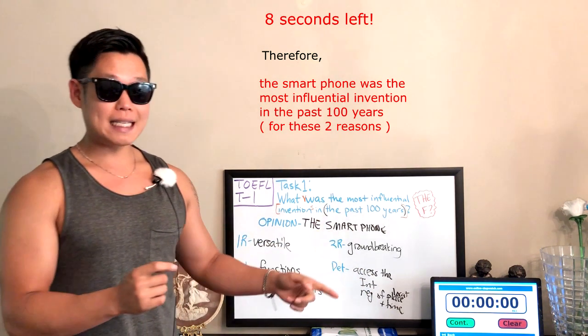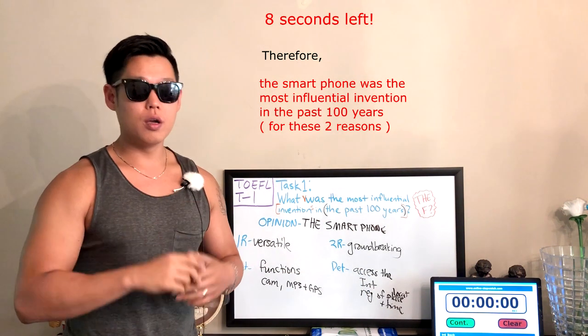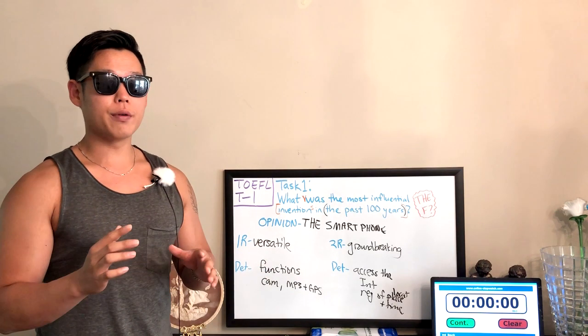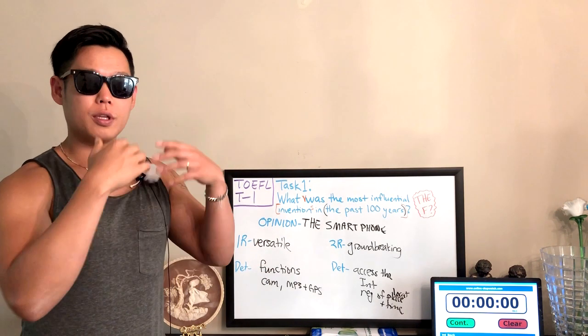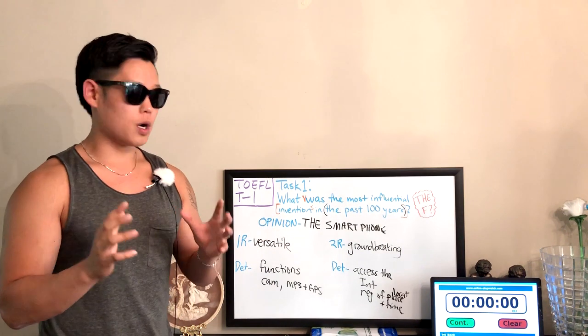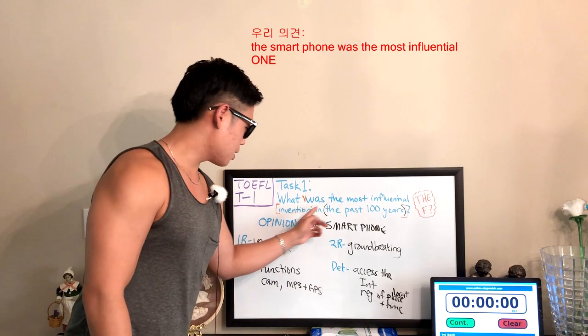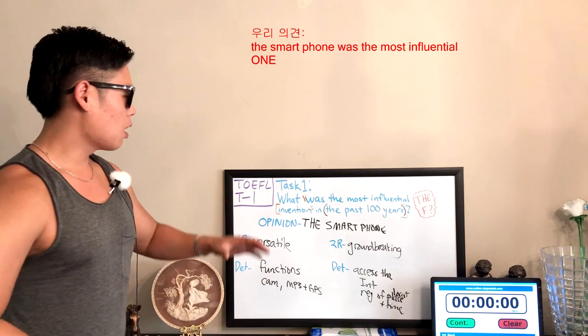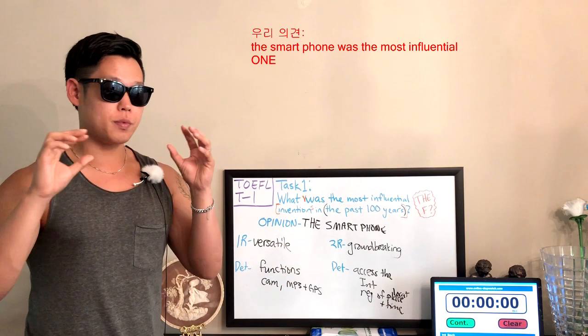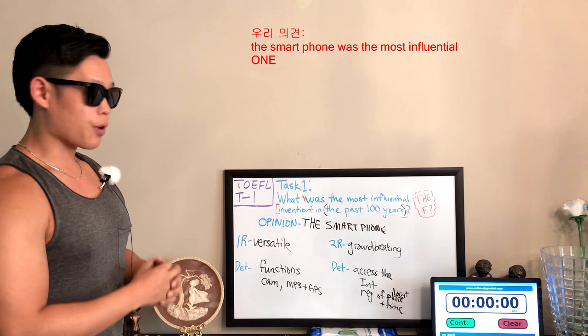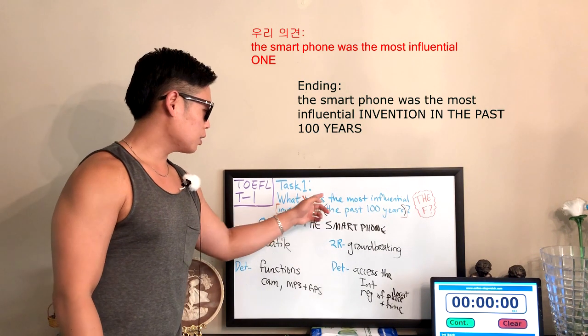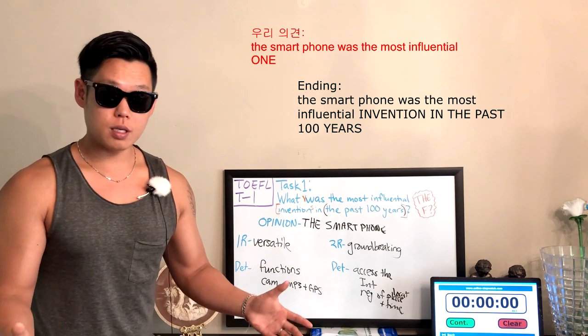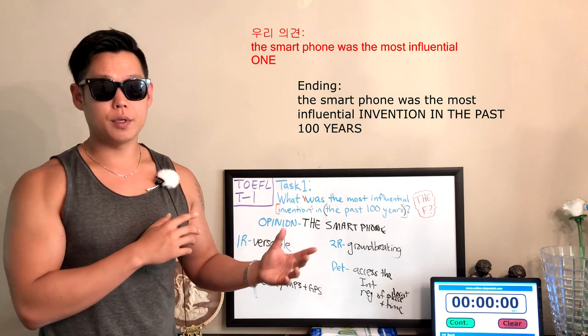Okay, I believe I had about eight seconds left after I was done with the second detail. So I said the ending statement. Now your ending sentence for task one questions are always going to be very similar to your opinion or the second part of your beginning sentence, okay? Now for this question, our opinion was the smartphone was and then the rest of the question. Actually, the smartphone was the most influential one. That was our beginning sentence. All we need to do for the ending statement is say something more specific instead of one. So for our ending statement, we said, or I said, the smartphone was the most influential invention, singular, in the past 100 years. So that's the ending statement, which is, like I said, very similar to your beginning statement.